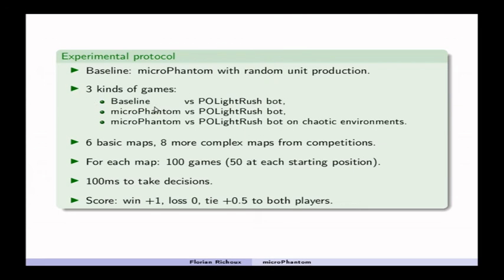So, the baseline bot versus PO light rush bot, which is the second best bot in the micro RTS competition in the partially observable track, MicroPhantom versus the same bot, and MicroPhantom versus the same bot on chaotic environments.